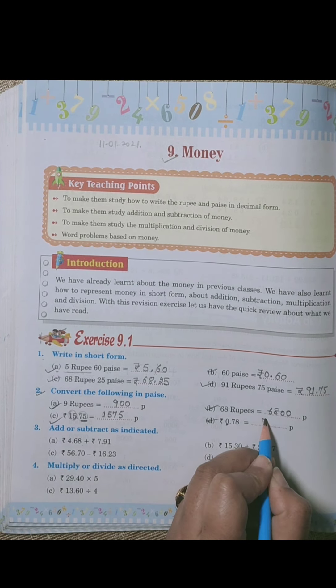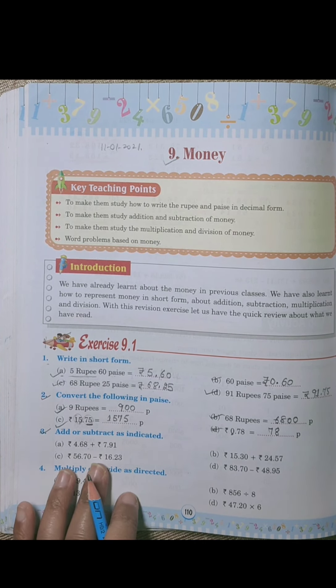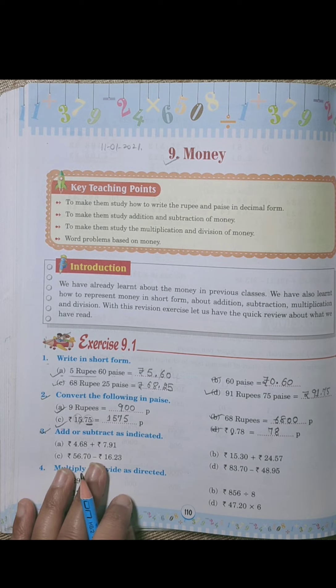In rupees, the number before the decimal represents rupees, like we did in the previous sum. So 0 into 100 is 0, plus 78, so it's directly 78 paise. Next, third is add or subtract as indicated, so we will do this sum in the notebook.